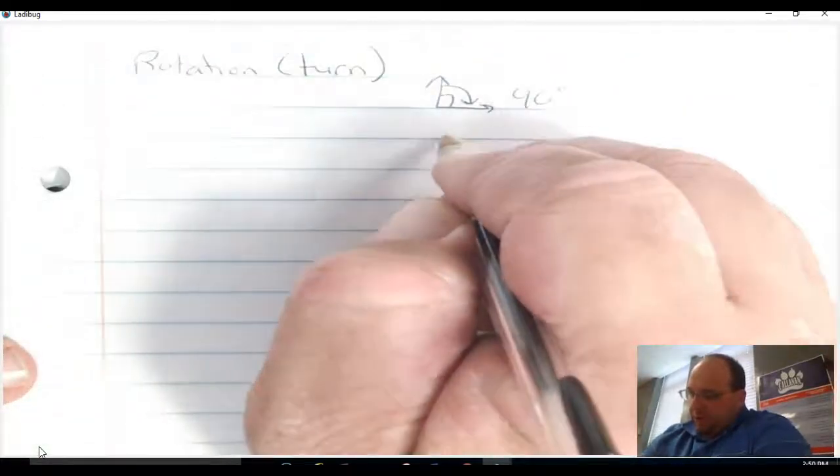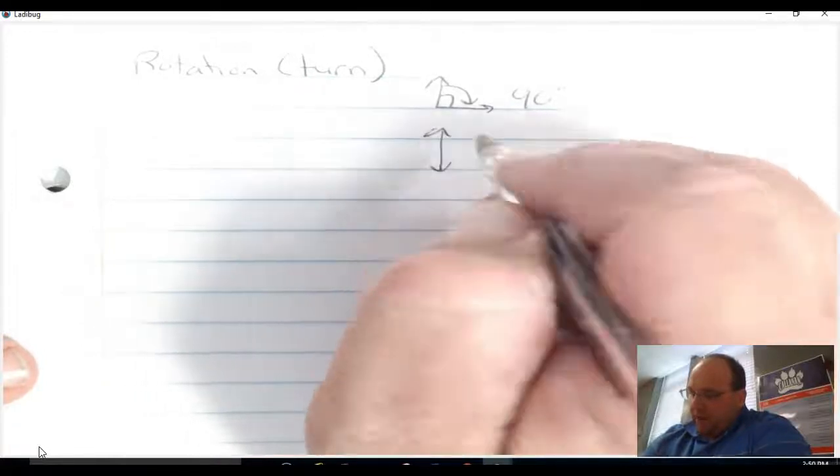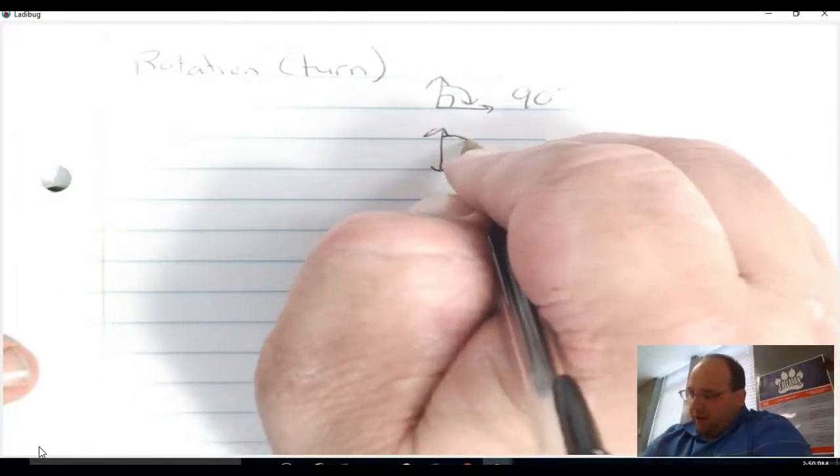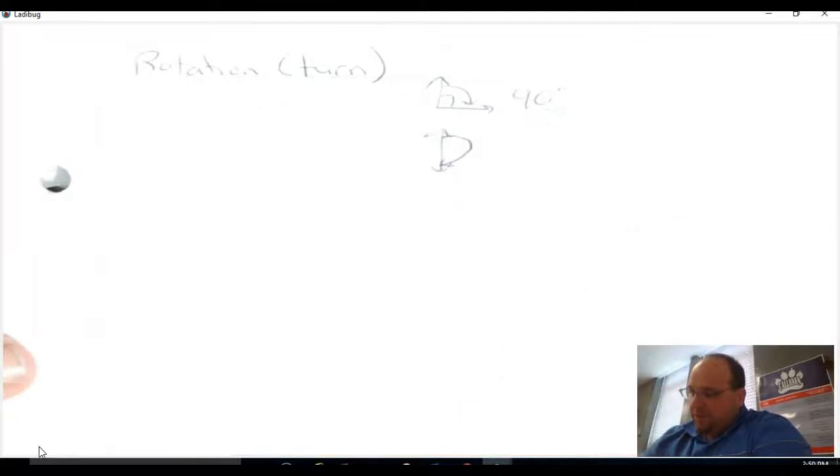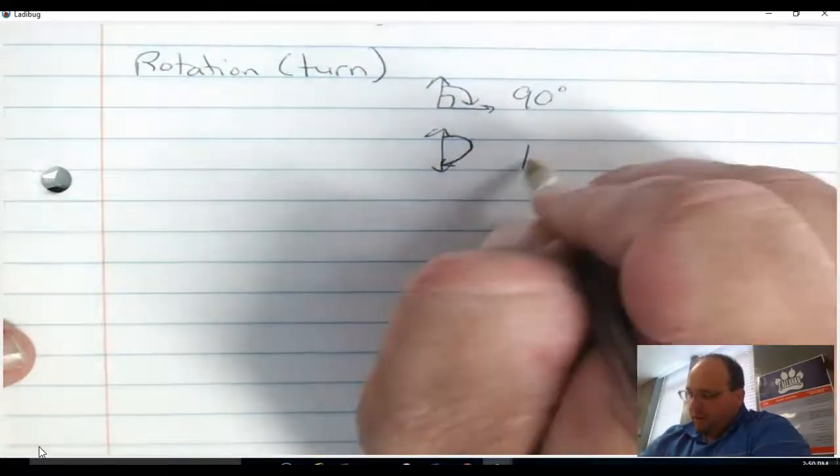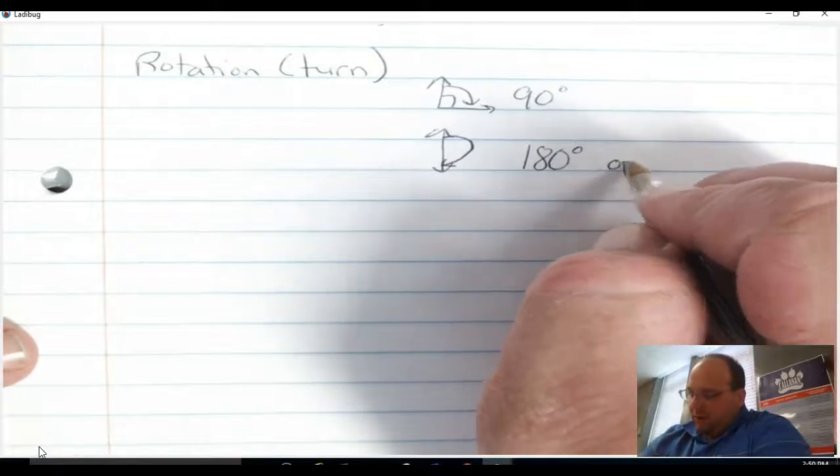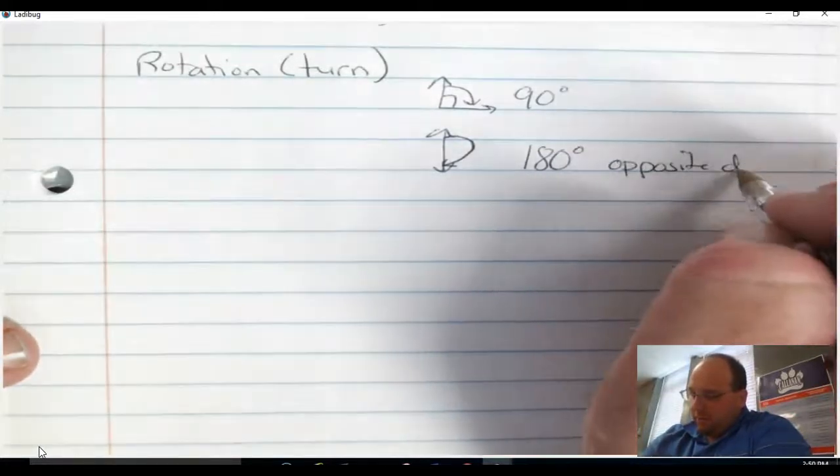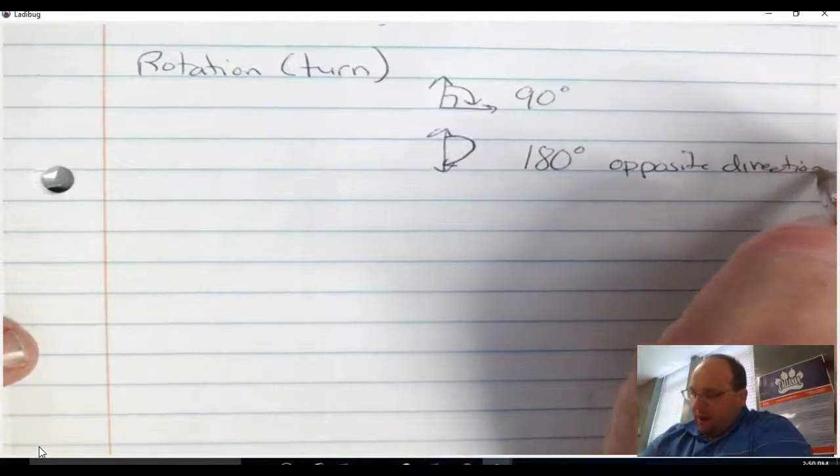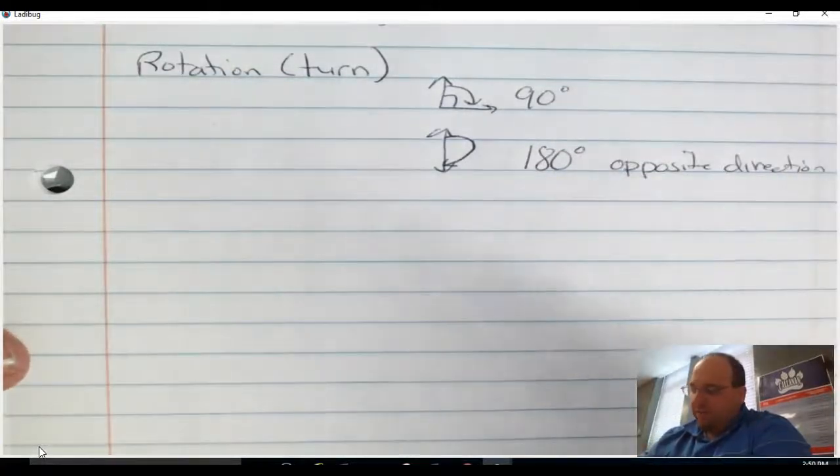The next type of rotation is what we call a 180. That's where you start here and you turn and go to the opposite direction. So 180 degrees, you're going to face the opposite direction. Think about it, if you're facing forward and you turn around and face backwards, that would be a 180-degree turn.